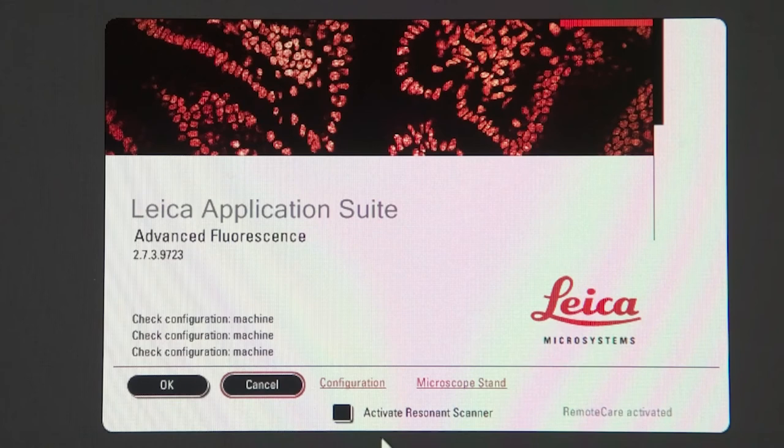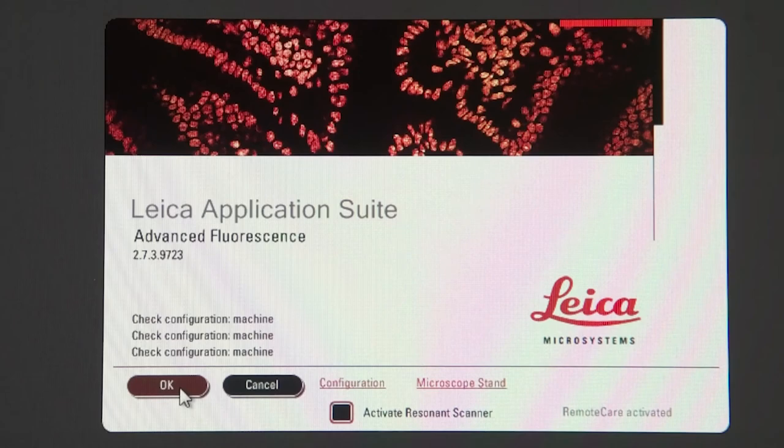Last, take a look at the activate resonant scanner. The resonant scanner is an ultra fast scanner that's used for live cells. We don't want to use it. If it's checked like this, make sure to uncheck it. Now once you've looked at all three of those things it's okay to go ahead and hit the okay button and keep going.